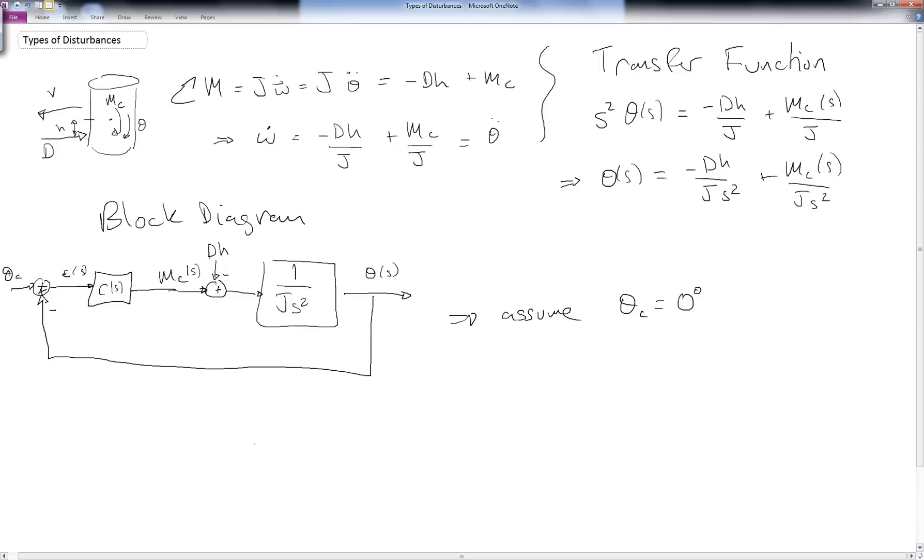So this becomes a pretty standard regulation problem. So now if we calculate the error for this function, we would see that it would be minus 1 over j s squared over 1 plus c of s times 1 over j s squared times w of s, which is just dh over s, because it turns on at a particular time. So we end up, after we simplify, with minus dh over j s squared plus cs.